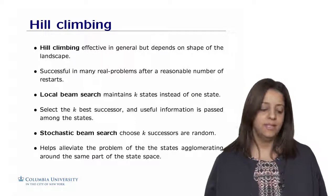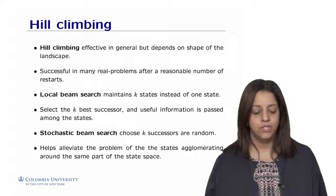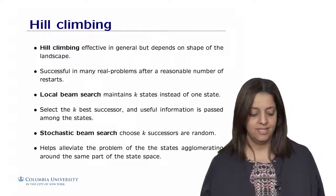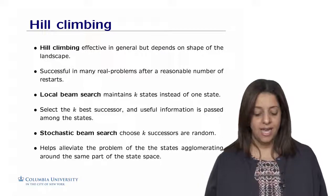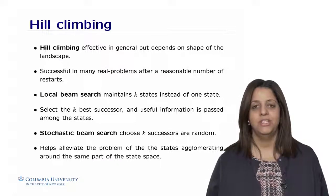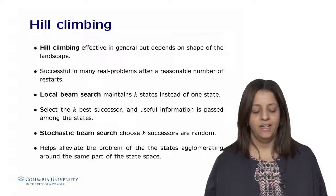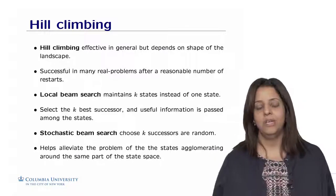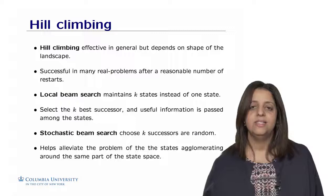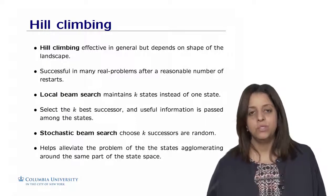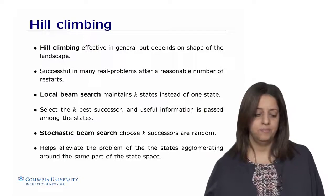One of the variants of hill climbing is called local beam search, in which we maintain k-states instead of maintaining only one single state. But the other difference is that the states are communicating useful information in order to make a more effective search. In order to help alleviate the problem of the state agglomerating, which may happen when states communicate, we use what we call stochastic beam search, in which we choose k successors at random.